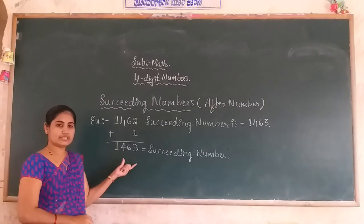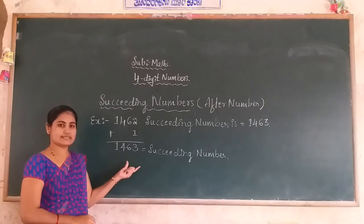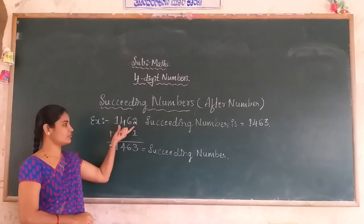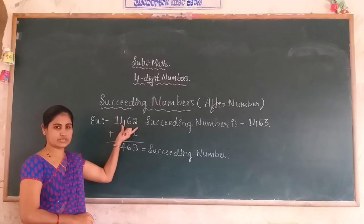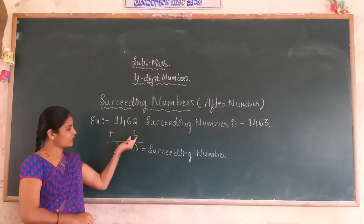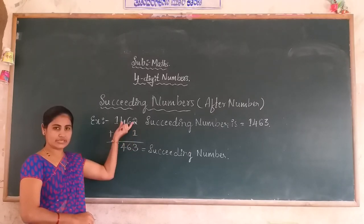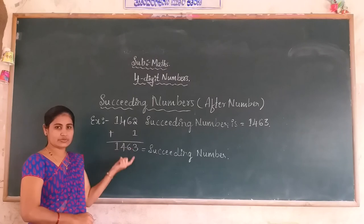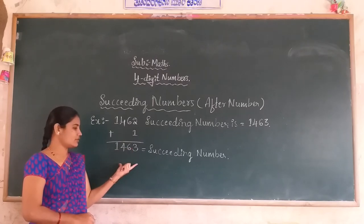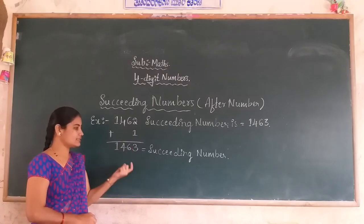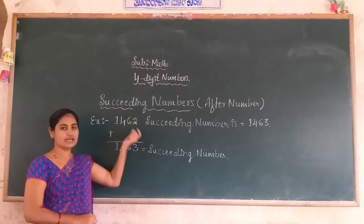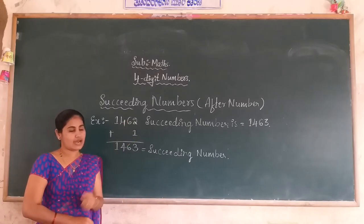So, 1,463 is the succeeding number of 1,462. How to find it? You add 1 to the given number and you get 1,463 — this is the succeeding number of the given number.